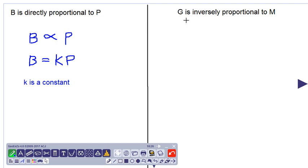Let's look on the right hand side now. G is inversely proportional to M. What does that mean?